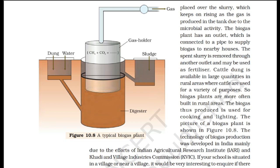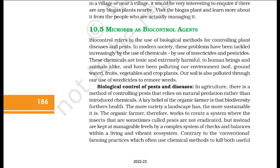Cattle dung is available in large quantities in rural areas, so biogas plants are more often built there. The biogas thus produced is used for cooking and lighting. The technology of biogas production was developed in India mainly due to the efforts of the Indian Agricultural Research Institute (IARI) and Khadi and Village Industries Commission (KVIC).